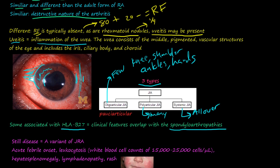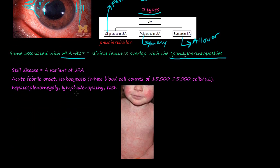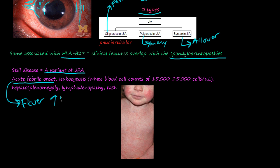Last but not least, Still's disease is a variant of JRA. How Still's disease differs from juvenile rheumatoid arthritis is this acute febrile onset — the patient gets an acute fever, and there are usually spikes. The fever goes up, then comes down, then spikes, then comes back down. So there are spikes in the fever.